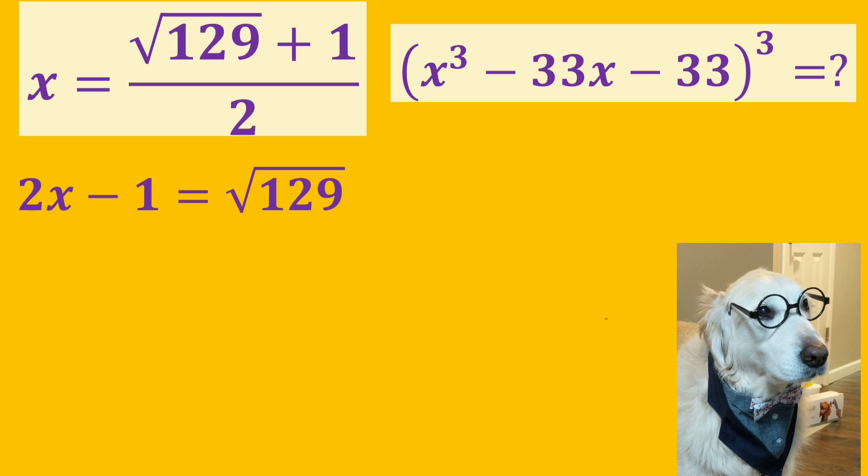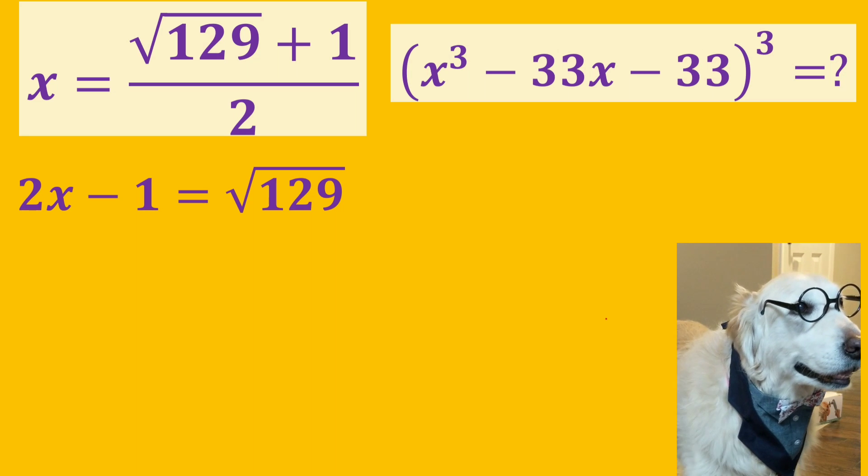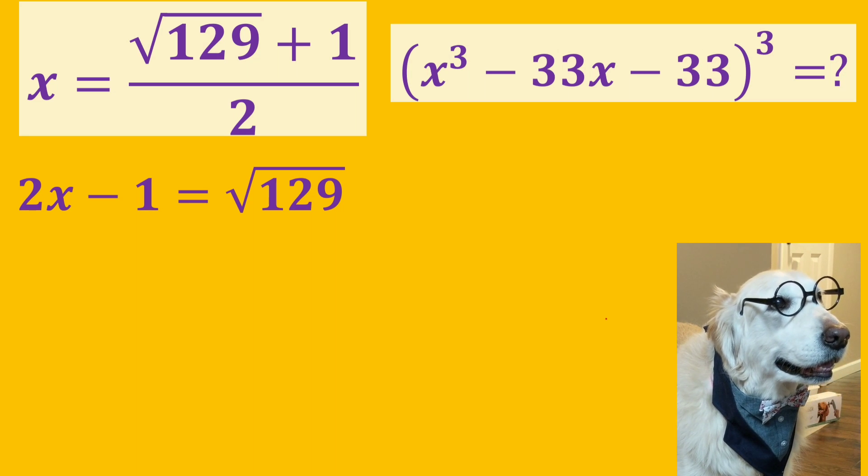We rearrange the terms of this equality and we write it as 2x minus 1 equals the square root of 129.